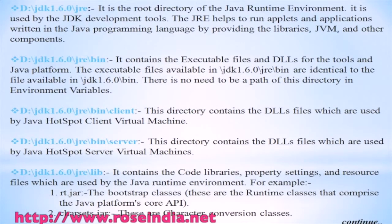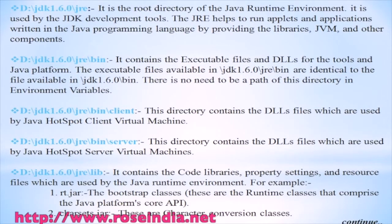JDK 1.6.0\jre is the root directory of the Java Runtime Environment. It is used by the JDK development tools. The JRE helps to run applets and applications written in the Java programming language by providing the libraries, JVM, and other components.